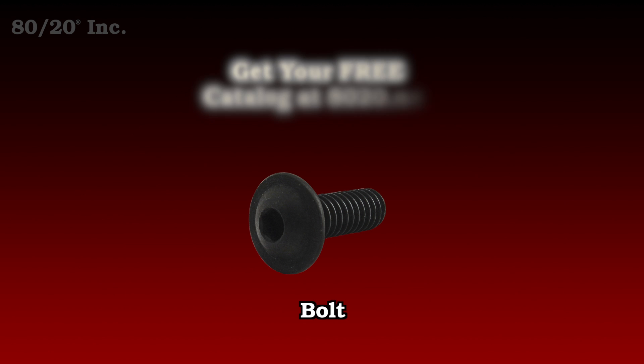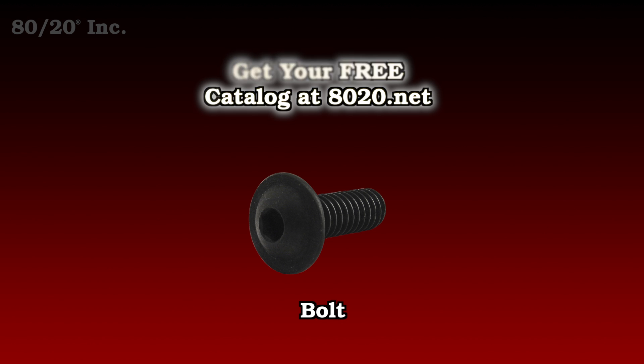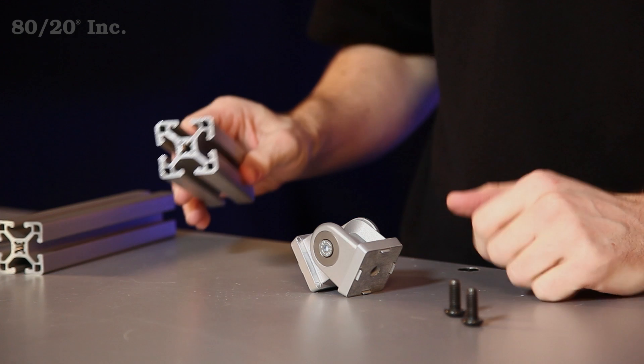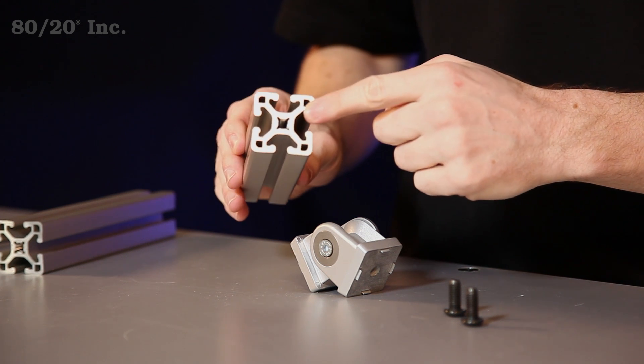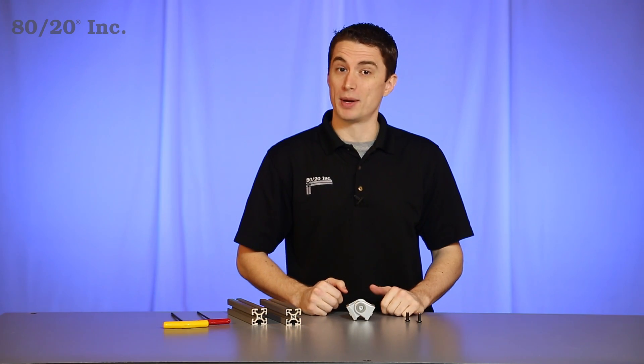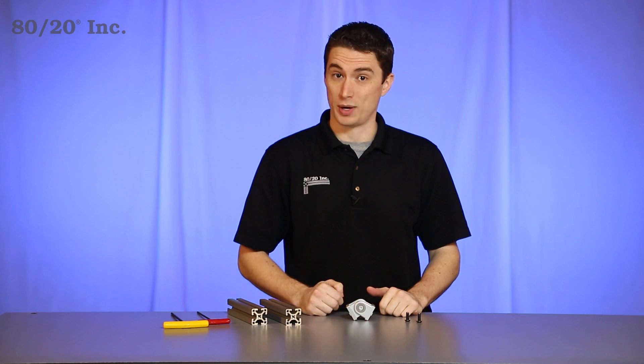One thing to keep in mind with the pivot joint is it's a standalone part and will need a bolt assembly to install. Also, due to the nature of the pivot joint, machining will need to be done to your bars, with each bar getting one end tap. More information on 8020's machining services and recommended bolt assemblies can be found in the 8020 product catalog.